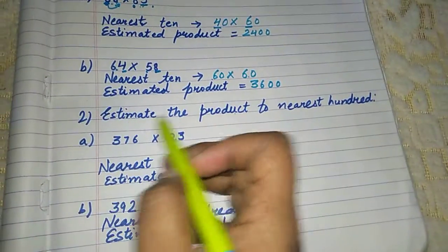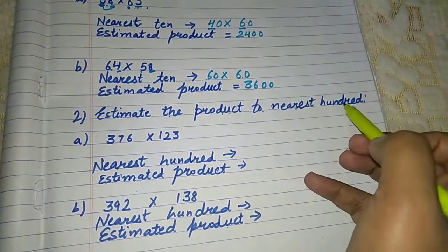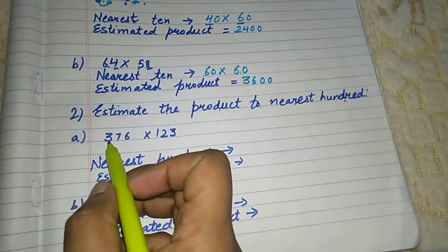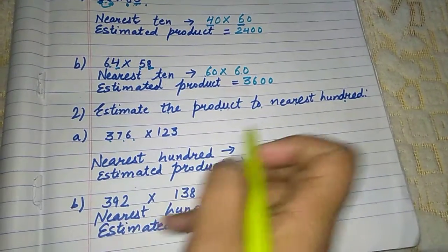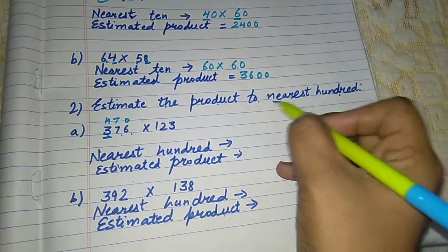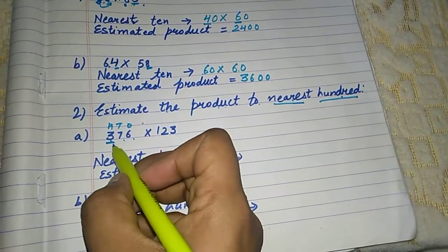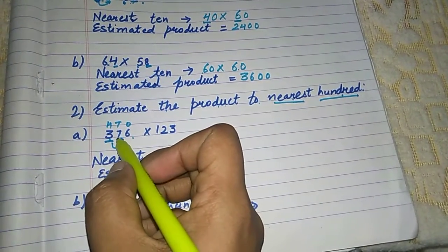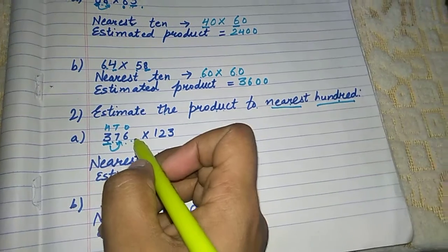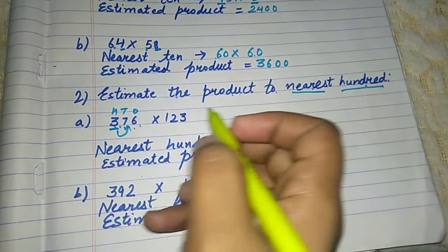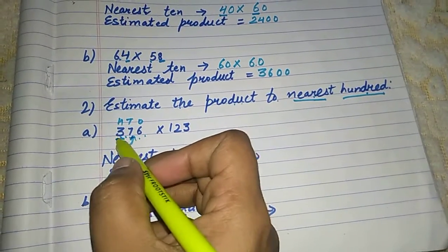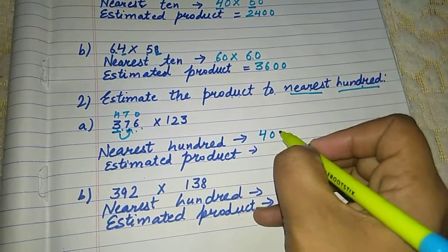Similarly, you have to estimate the product to nearest hundred. So let's see how will you estimate the product to nearest hundred. The first is 376 multiply 123. Nearest hundred. Ones tens hundred. Underline the hundred. Check the nearest place. Strong number, weak number. In my previous lecture, I have explained. So it is a strong number. Seven. Seven that means strong. So it will give one to three. So this will be four hundred.